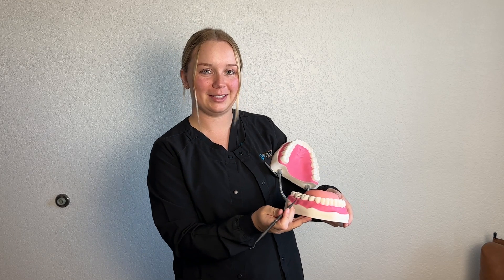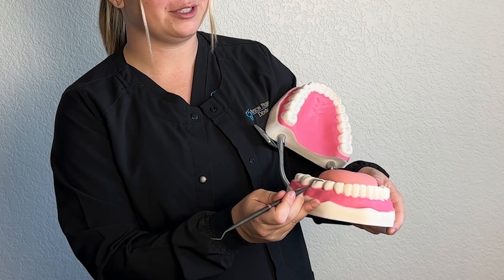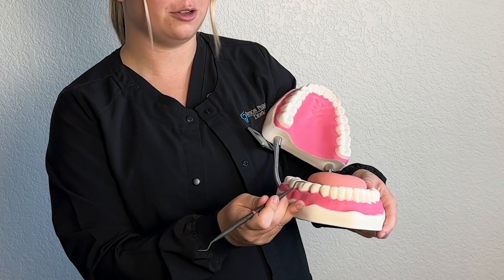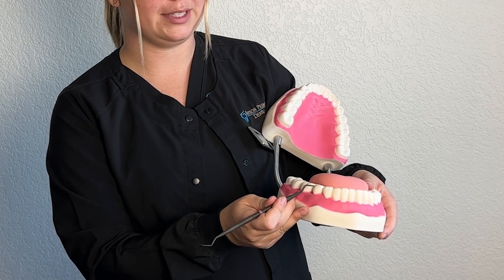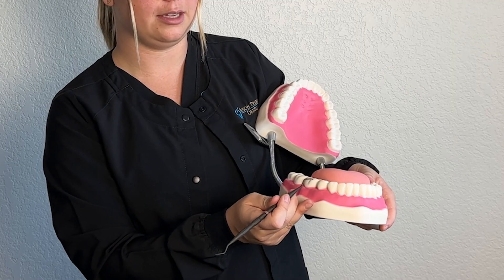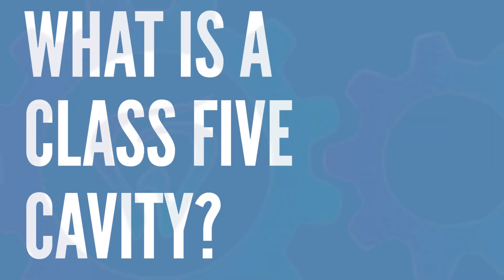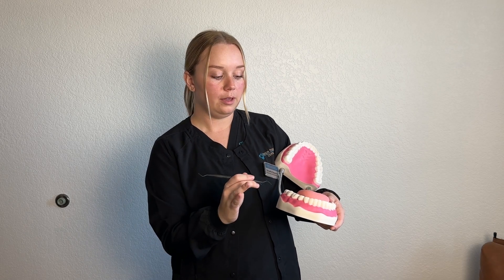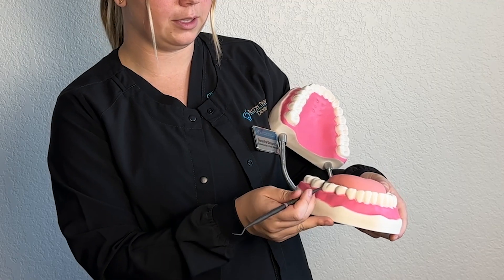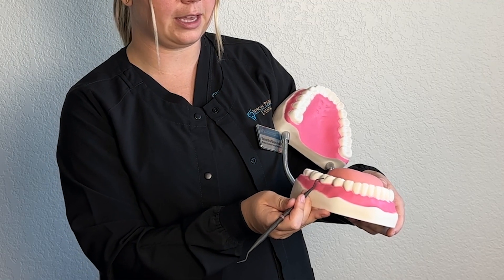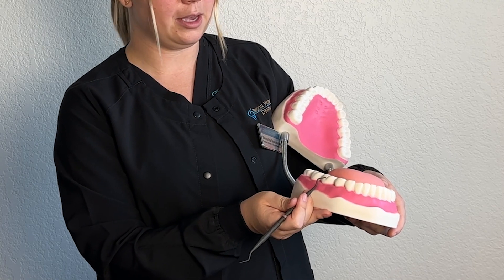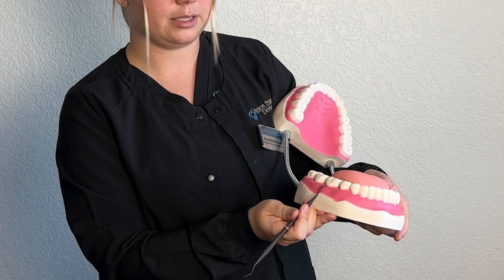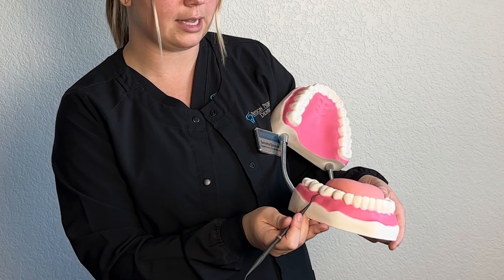Interproximal just means in between the teeth — those are the proximal surfaces that touch tooth to tooth. A Class 5 means it's at the gumline. You can have a single buccal filling in a little groove or pit, but if it's along the gumline due to recession or other causes, that's a Class 5. Anything that touches that gumline is going to be a Class 5 filling.